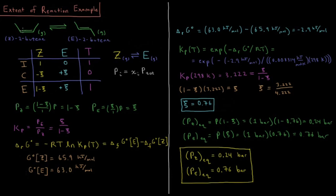The final pressure of our reactant equals its equilibrium pressure divided by the total pressure, times the total pressure. From Dalton's law of partial pressures, the pressure of a given component equals its mole fraction times the total pressure, assuming ideal gases. So we have (1 minus C) over 1 times P, which equals 1 minus C, because P is always 1 bar for this reaction. The pressure of the E isomer is C over 1 times the total pressure, so it equals C bar. Whatever our extent of reaction is, we have that many bar of product and 1 minus that many bar of reactant.